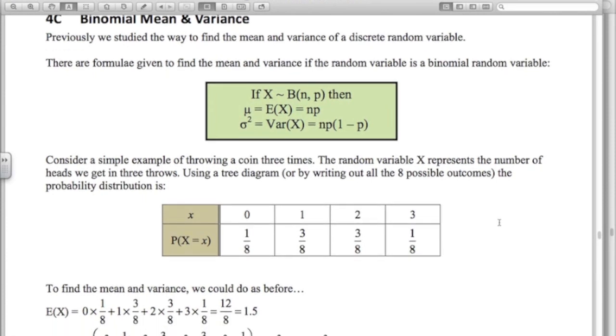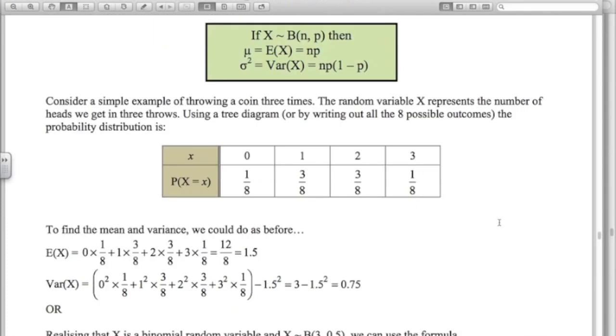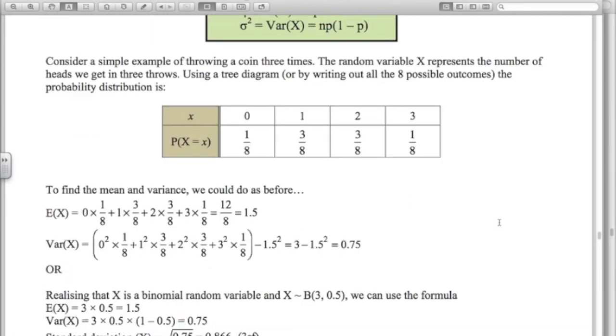So if we look at this random variable for tossing a coin three times and X is representing the number of heads that we get, to work out the mean and variance we could go through the process that I showed you earlier.